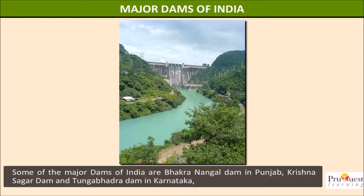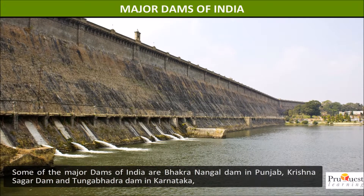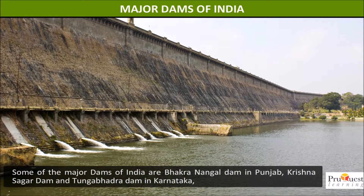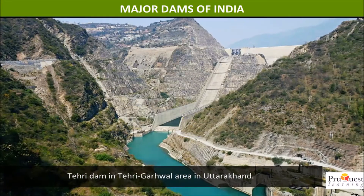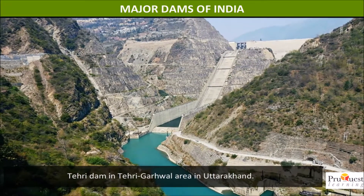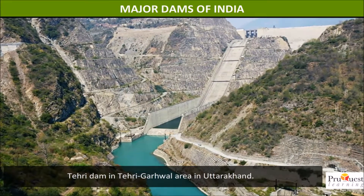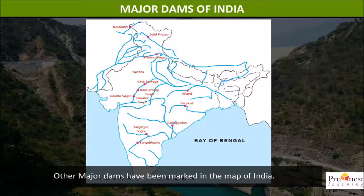Some of the major dams of India are Bhakra Nangal Dam in Punjab, Krishna Sagar Dam and Tungabhadra Dam in Karnataka, and Tehri Dam in the Tehri Garhwal area in Uttarakhand. Other major dams have been marked on the map of India.